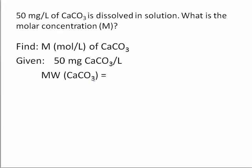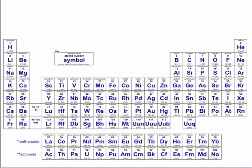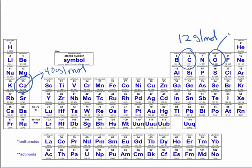The molecular weight of calcium carbonate can be found using a periodic table. You see that the element calcium has an atomic mass of 40 grams per mole. Likewise, carbon has an atomic mass of 12 grams per mole, and oxygen has an atomic mass of 16 grams per mole. So if we're trying to find the molecular weight of calcium carbonate,